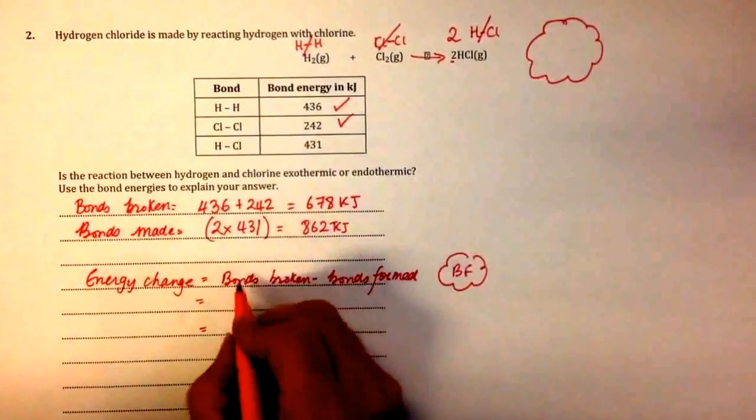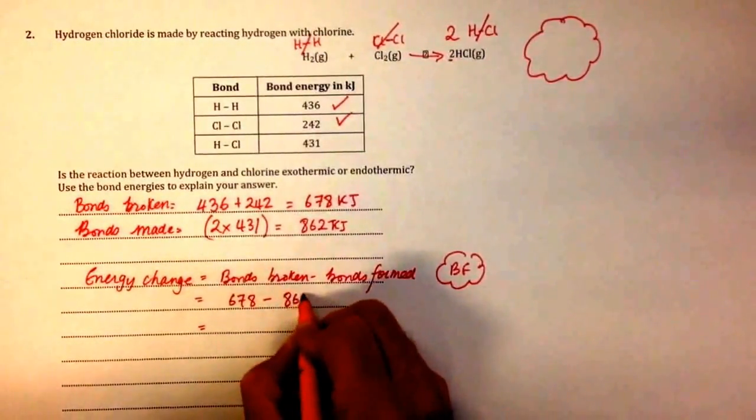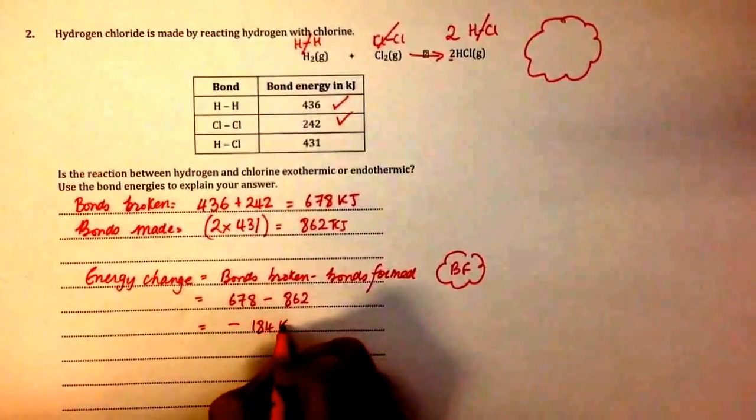The bonds that are broken are 678 kilojoules, minus the bonds that are made, 862 kilojoules. The answer is minus 184 kilojoules.